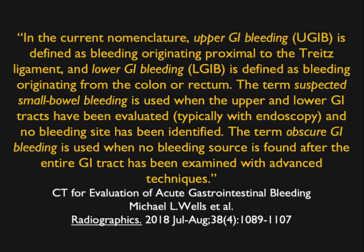Lower GI bleeding is where CTA is most valuable, looking for blood coming from the small bowel or colon. The term 'suspected small bowel bleeding' is used when the upper and lower GI tracts have been evaluated and no bleeding site identified. 'Obscure GI bleeding' is when no bleeding source is found after the entire GI tract has been examined with advanced techniques. Sometimes bleeding stops and the source is never found; sometimes it recurs later.